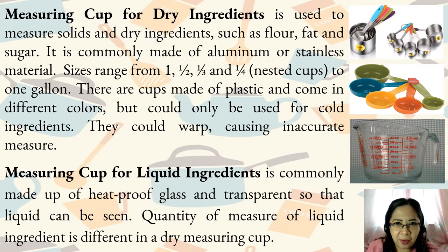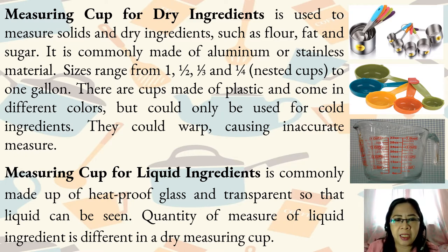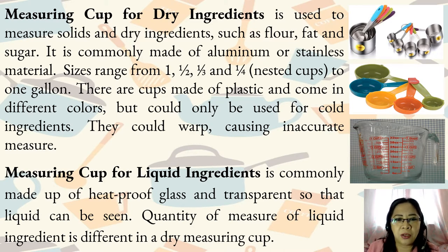Measuring cup for dry ingredients is used to measure solids and dry ingredients such as flour, fat, and sugar. It is commonly made of aluminum or stainless material. Sizes range from one, one-half, one-third, and one-fourth nested cups to one gallon. There are cups made of plastic that come in different colors but could only be used for cold ingredients, as they could warp, causing inaccurate measure.